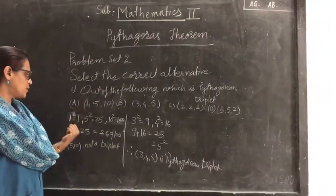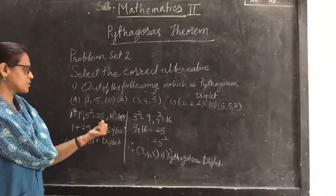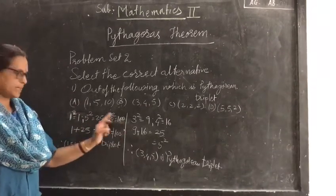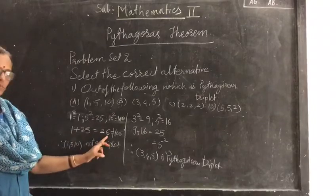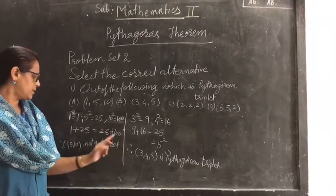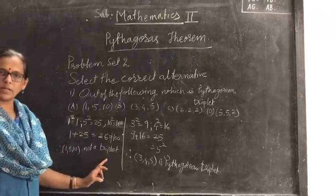Now, first alternative: 1 square is 1, 5 square is 25, and 10 square is 100. So, 1 plus 25 is 26, which is not equal to 100. So, 1, 5, 10 is not a Pythagorean triplet.